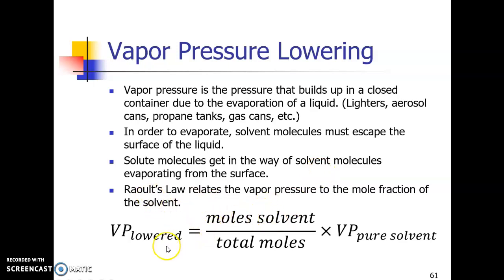And Raoult's Law, which is shown here just for, you're not going to have to do calculations, don't worry, not in this class anyways, but basically it just says that the more moles of solvent you have, the closer you're going to be to the original vapor pressure. Because if it was all moles of solvent, then your moles of solvent divided by your total moles, those numbers would be the same, so you'd get one when you divided them, so you'd get the maximum vapor pressure possible.